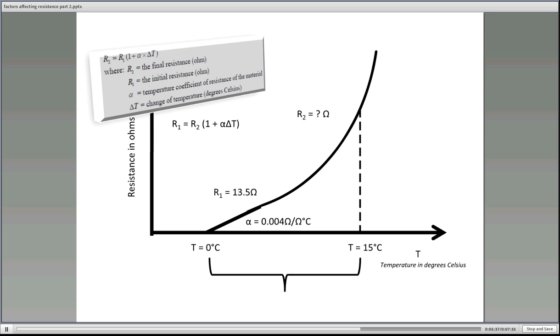Now we put in our equation. So R2 equals R1 in brackets 1 plus alpha delta T. And if you notice in the equation at the top there it has alpha times delta T. If we don't put anything in between the alpha and the delta T that's the mathematical notation. Okay, so 13.5 in brackets 1 plus 0.004 times 15. So there's delta T there.